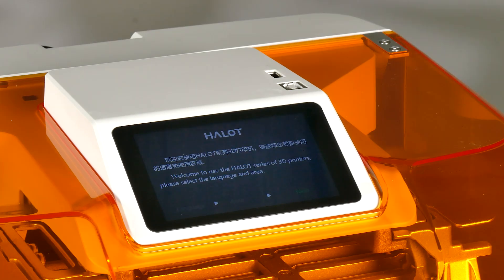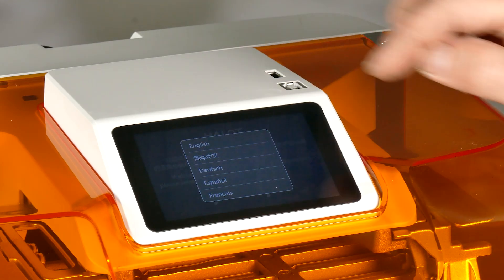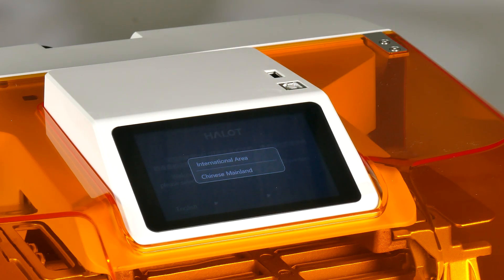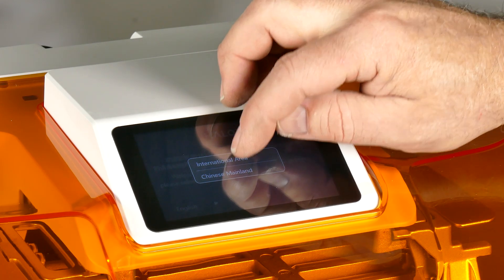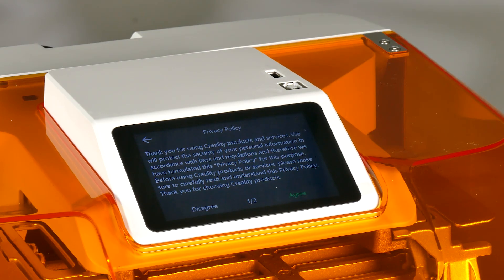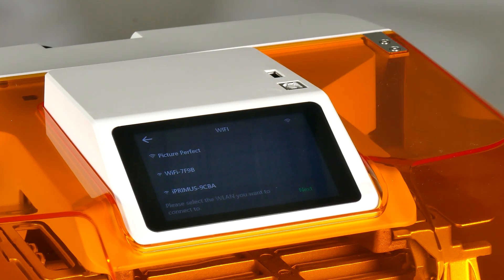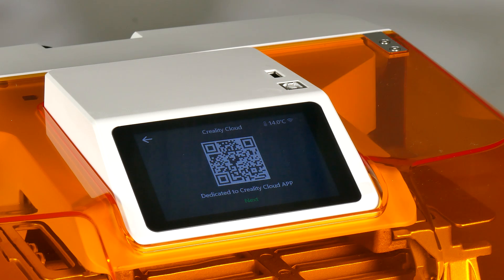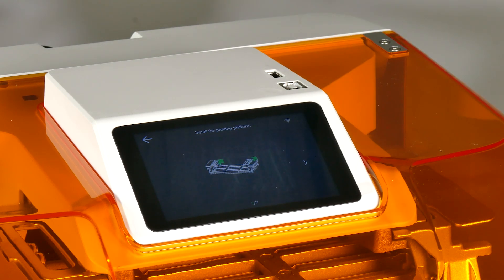The setup process is pretty straightforward. First we need to pick our language, which is English, and also we're going to go for international. Hit next. Of course we have to agree to their privacy policy, then we pick our network, and that bit I did off camera because it's private. Then you can use this QR code and sign up to Creality Cloud. Then there's seven steps to check to make sure you've done everything. First one, we've installed the plate. Yes we have.